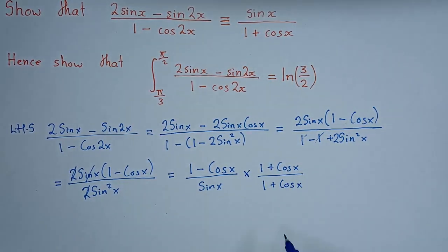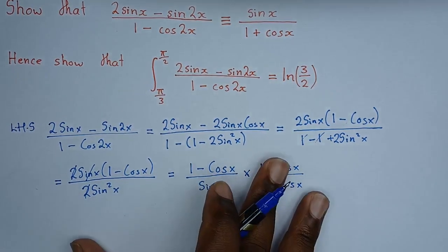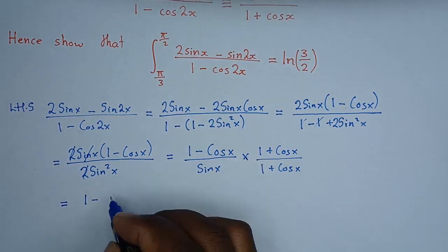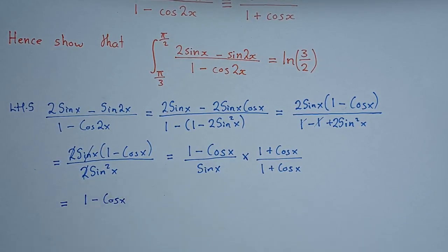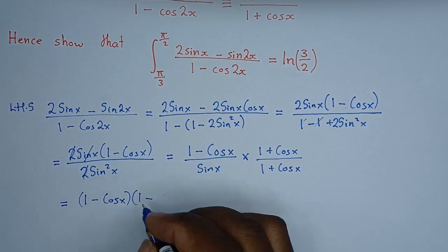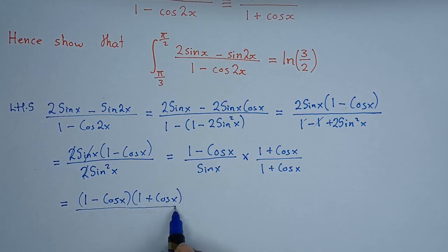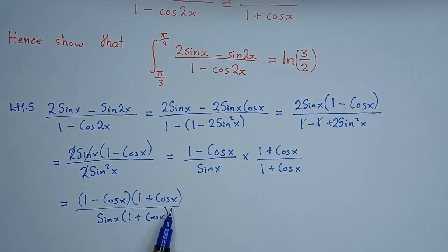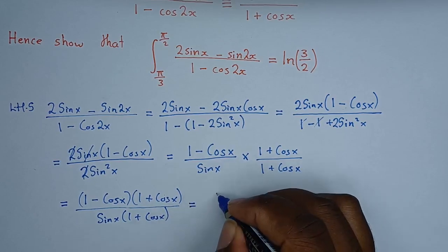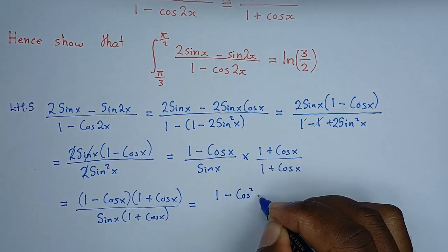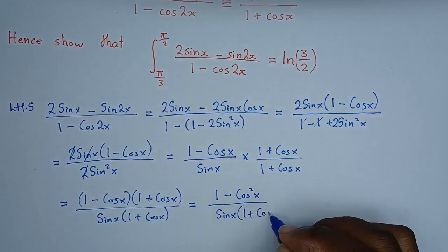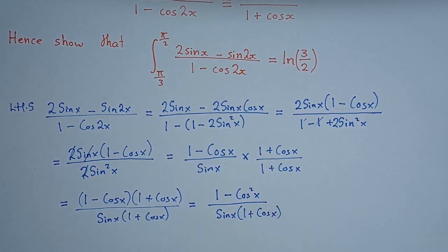In the numerator we now have the difference of two squares: (1 − cos x)(1 + cos x), divided by sin x(1 + cos x). Applying the difference of two squares formula gives us (1 − cos²x) in the numerator over sin x(1 + cos x).